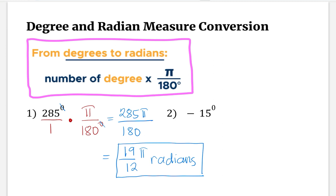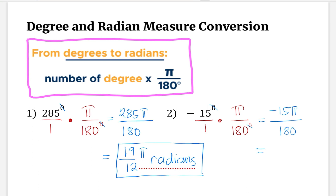Let us try this again. The first thing we need to do is write the given as a fraction and then multiply the given with pi over 180 degrees. We're going to cancel the degree symbol and multiply straight across, so that would be negative 15 pi over 180. Simplifying negative 15 over 180, that would be 1 over 12 pi, or we can write our answer as negative pi over 12 radians.